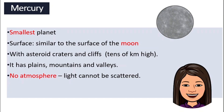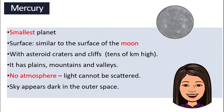Our Earth and many other planets have an atmosphere. Atmosphere is a layer of gases that is blanketing the whole planet — it's like wearing a jacket made of different combinations of gases. But Mercury does not have that, so light cannot be scattered, and the sky always appears dark in outer space.